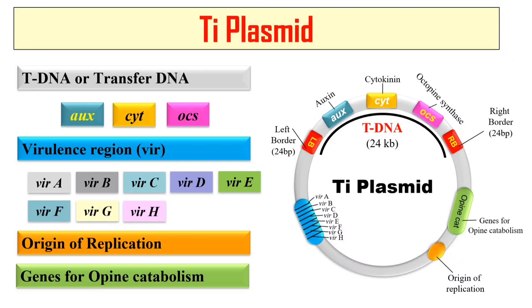The last element is the genes for opine catabolism. The Ti plasmid has genes for octopine synthetase, and when octopines or nopalines — which are a group of opines — are formed, there must be something to degrade and metabolize them. So the Ti plasmid also contains opine catabolism genes required for the catabolism of these opine compounds, which may be either octopine or nopaline.